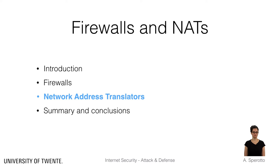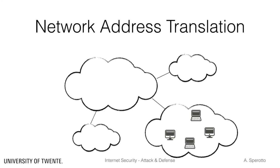In this set of slides we will talk about network address translators. We have seen that firewalls introduce a single checking point in a network where security policies can be enforced. These logically divide an address space into an internal trusted network and an external untrusted network. There is another method that makes use of the idea of internal and external network, and it is typically implemented on the network access router: Network Address Translators.